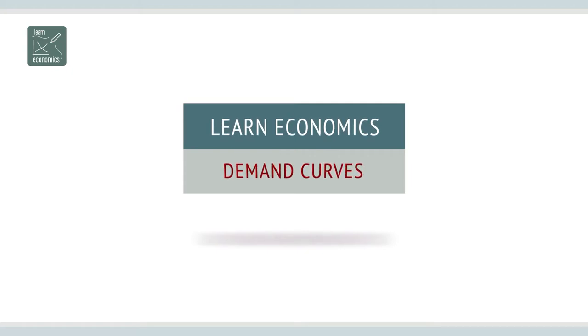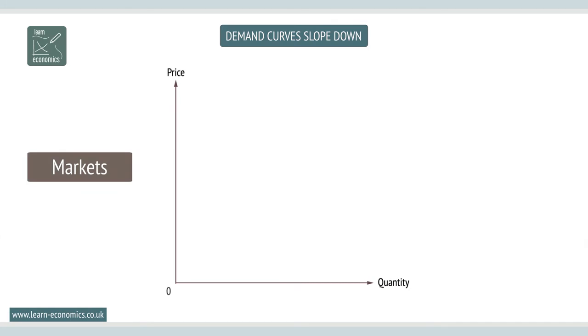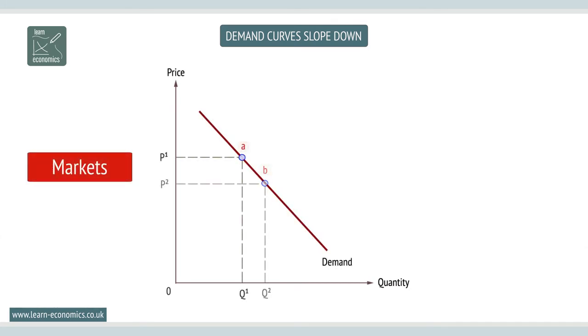Demand curves slope down from left to right. Price and quantity demanded are usually inversely related. At lower prices, consumers will consume more. Why is this? There are several answers.